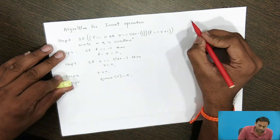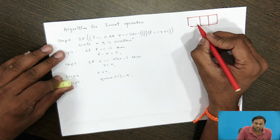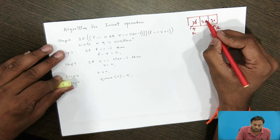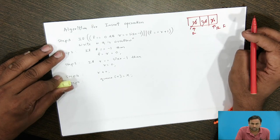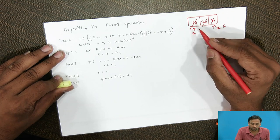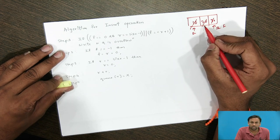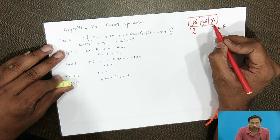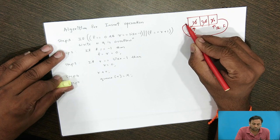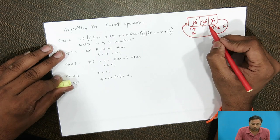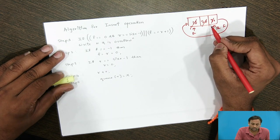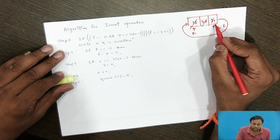In the linear queue, if you delete all the elements — 10, 20, and 30 — F will move forward but R stays at the same position. We are not going to connect the last position back to the first position. That's why memory utilization is not done properly in the linear queue. To make effective utilization, we connect the last end of the queue to the first end, so if space is available we can re-insert data. That is known as a circular queue.